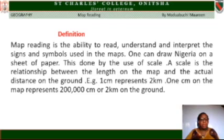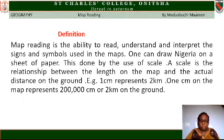A scale is the relationship between the length on the map and the actual distance on the ground. For example, one centimeter represents two kilometers. One cm on the map represents two hundred thousand cm, or two kilometers, on the ground.